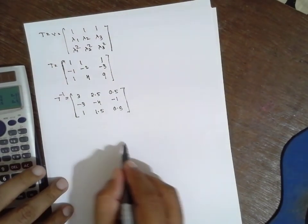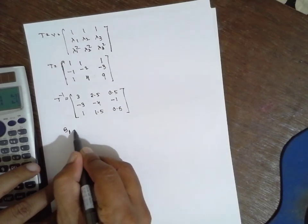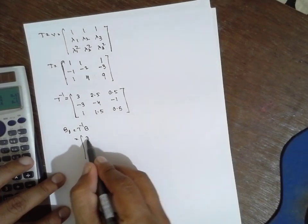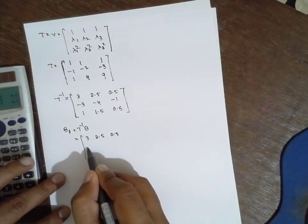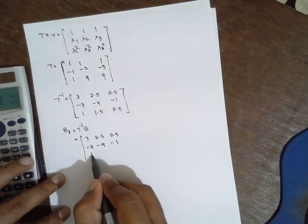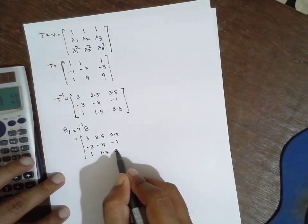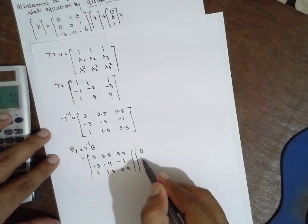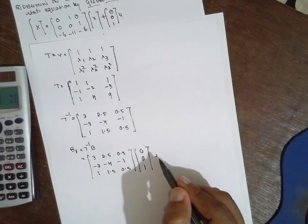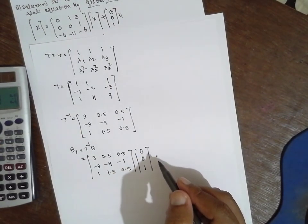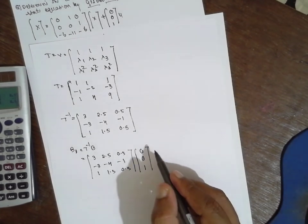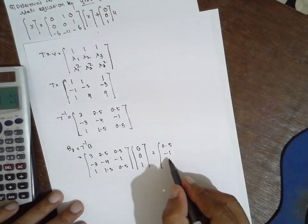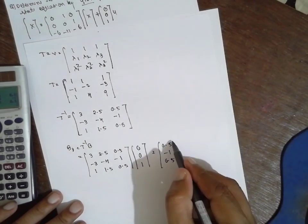Now the final expression: T⁻¹B. We multiply T⁻¹ = [3, 2.5, 0.5; -3, -4, -1; 1, 1.5, 0.5] by B = [0; 0; 1]. The answer obtained is T⁻¹B = [0.5; -1; 0.5]. This is the result of the matrix multiplication.